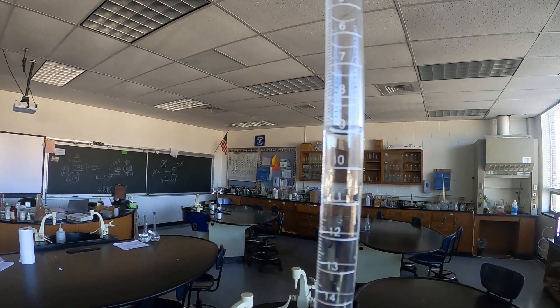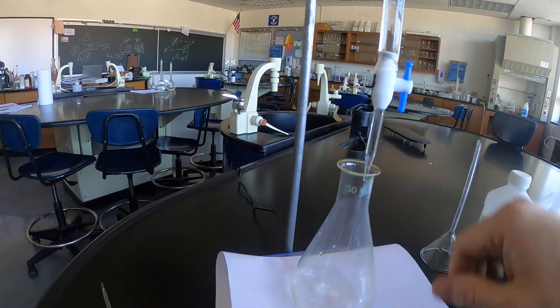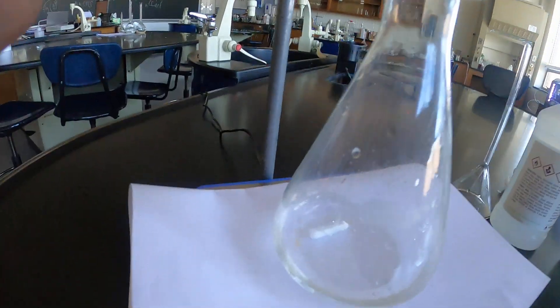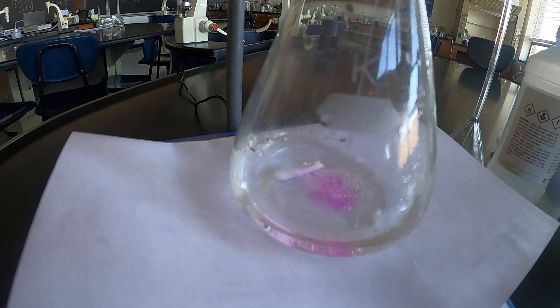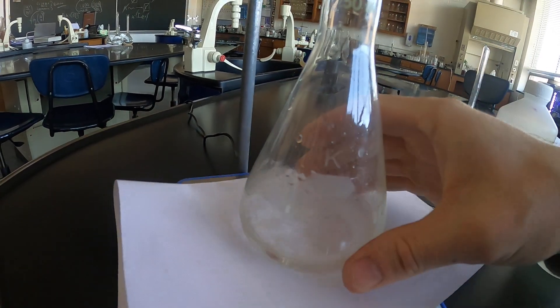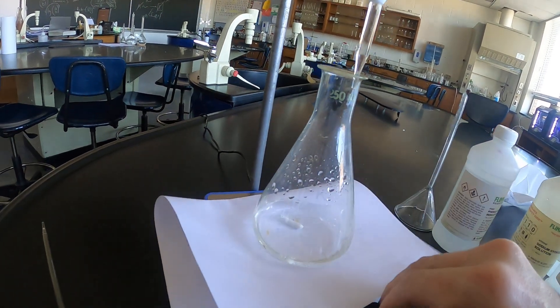About 10 ml. Now what you'll notice if I stop this for a second, turn the stir bar off, you'll notice some pink starting to build up in the flask but then when I stir it again that base is neutralized right away because there's still excess acid in my flask.